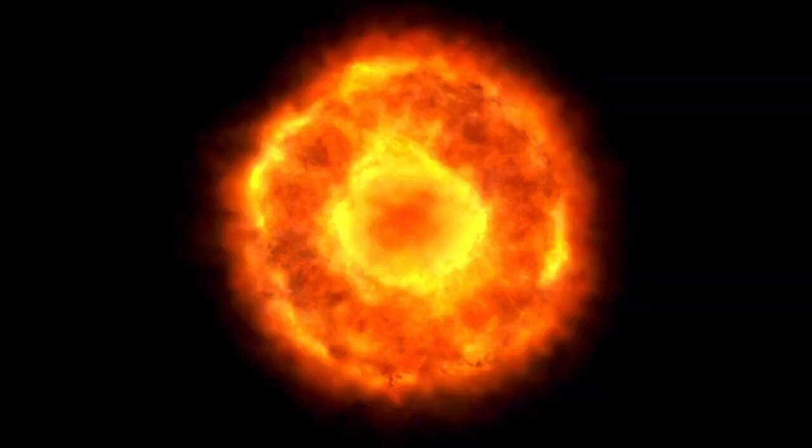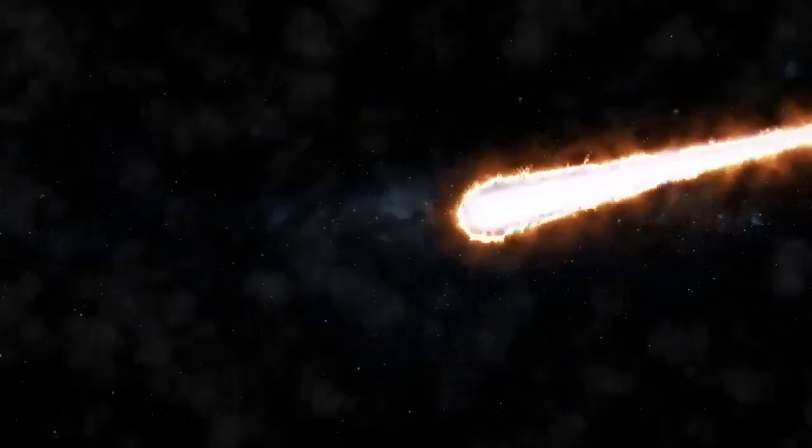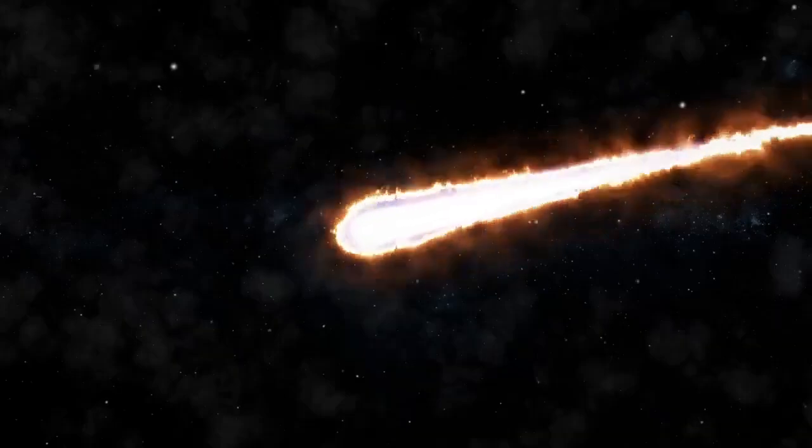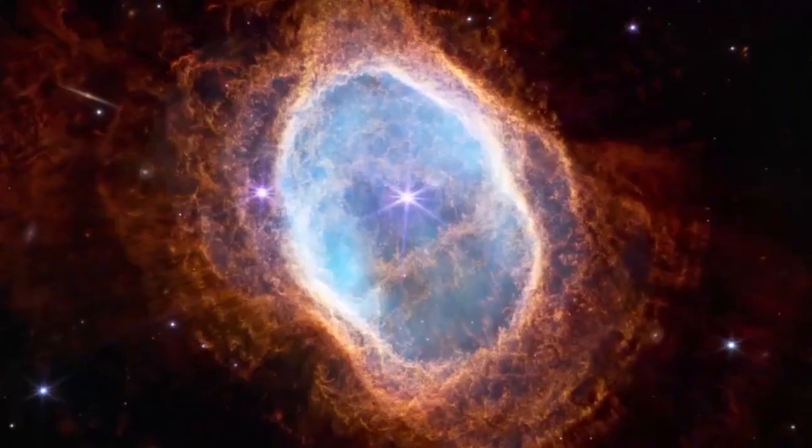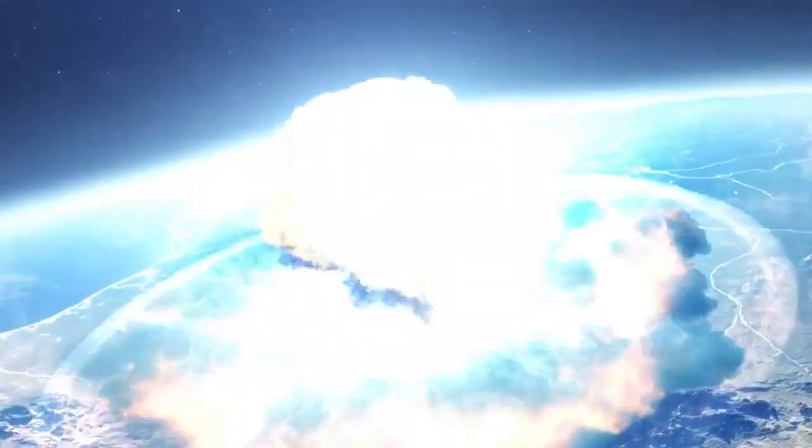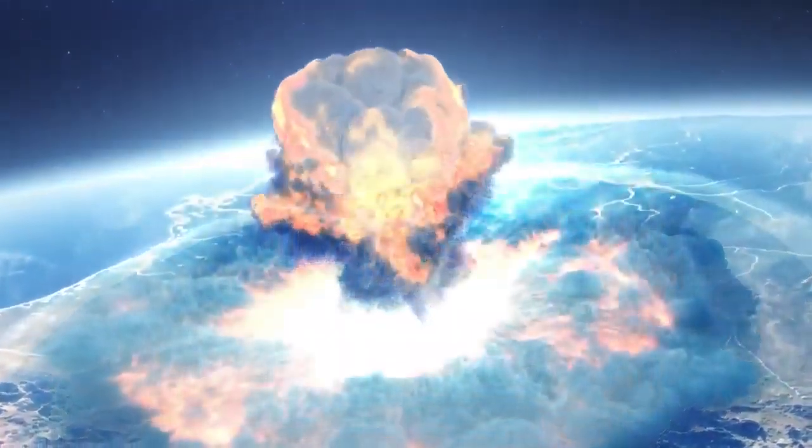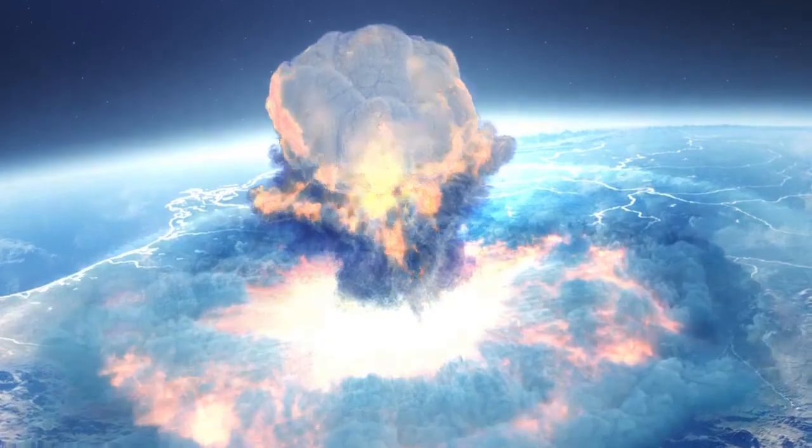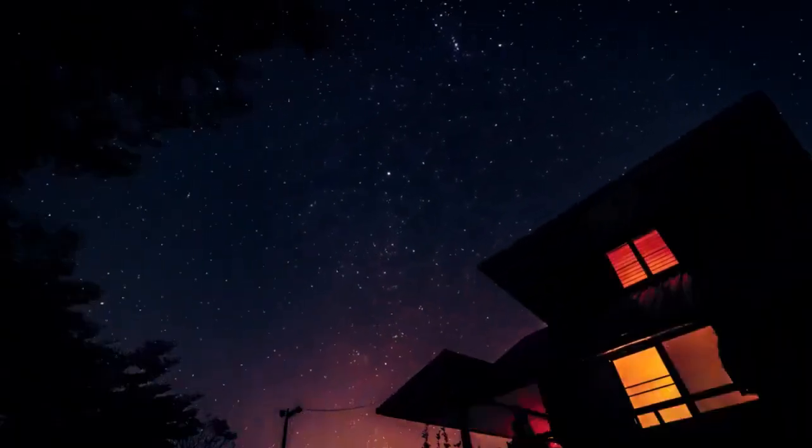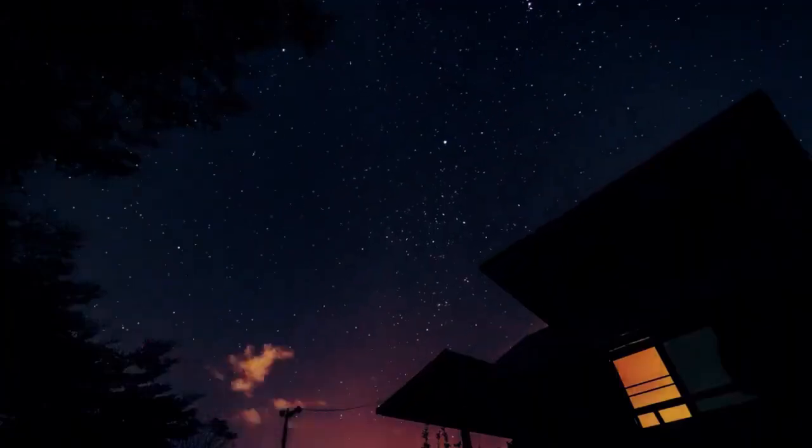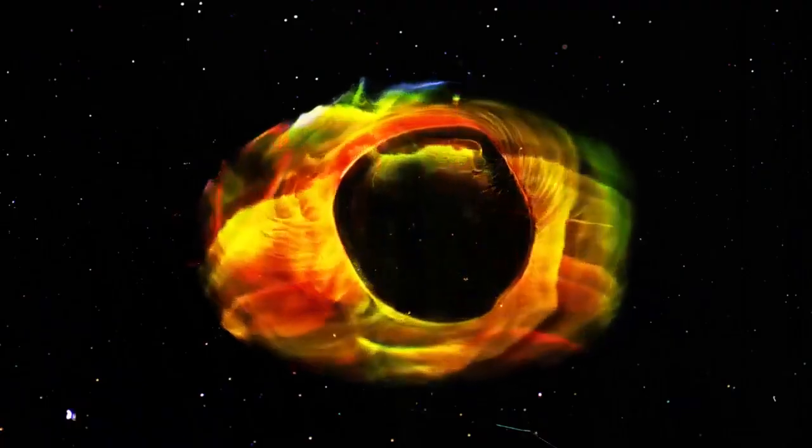Betelgeuse, also known as Alpha Orionis, is one of the largest and brightest stars in the night sky. Located about 724 light-years away from Earth, it is part of the constellation Orion, easily recognizable by its position near the belt of three stars. This red supergiant is approximately 100,000 times more luminous than our Sun, and though it may seem a distant and harmless giant, its size and proximity to Earth make it one of the most studied stars in the sky.